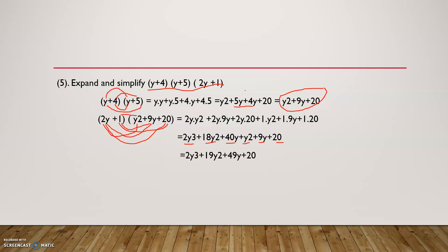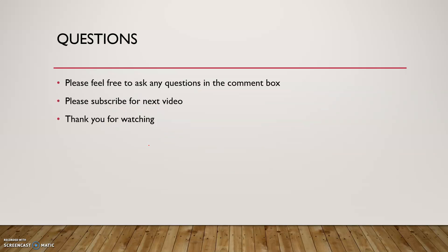So expanding these three brackets together, our answer is 2y cubed plus 19y squared plus 49y plus 20. That's it for today. If you have any questions, please ask in the comment box, please subscribe for the next video, and thank you for watching.